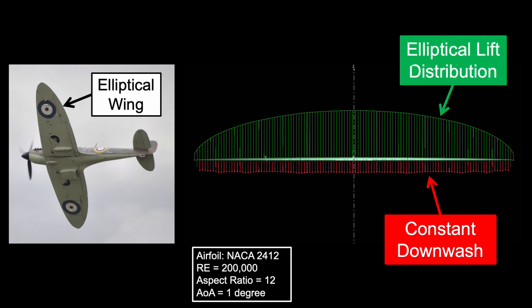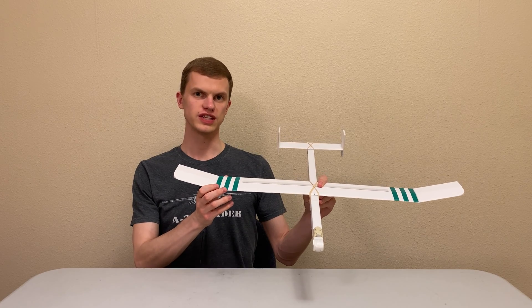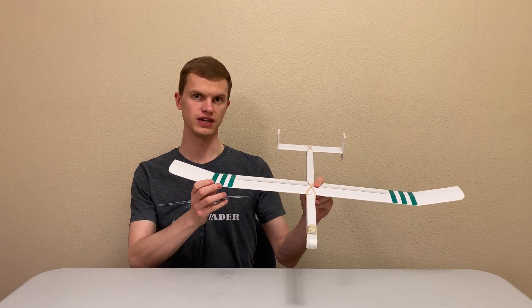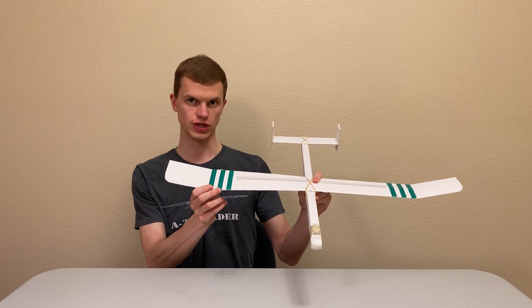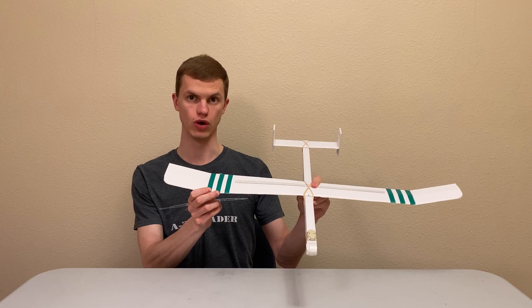Designing the wing in the shape of an ellipse makes for an almost perfectly elliptical lift distribution and constant downwash across the wingspan. In this drag polar, we can see how tapered and elliptical wings have lower drag coefficients compared to rectangular ones, although the difference is very small. Another thing that's sometimes done to improve the span efficiency factor is to design a twist into the wings so that the wingtips are at a slightly lower angle of attack than the wing root.